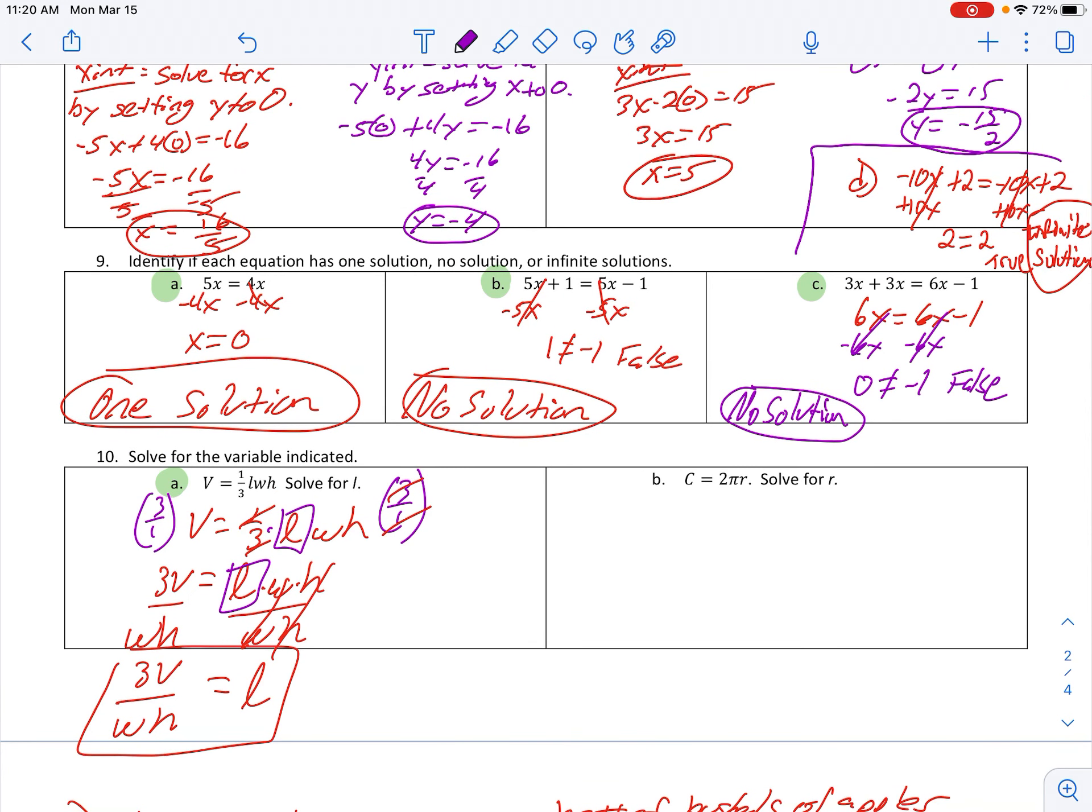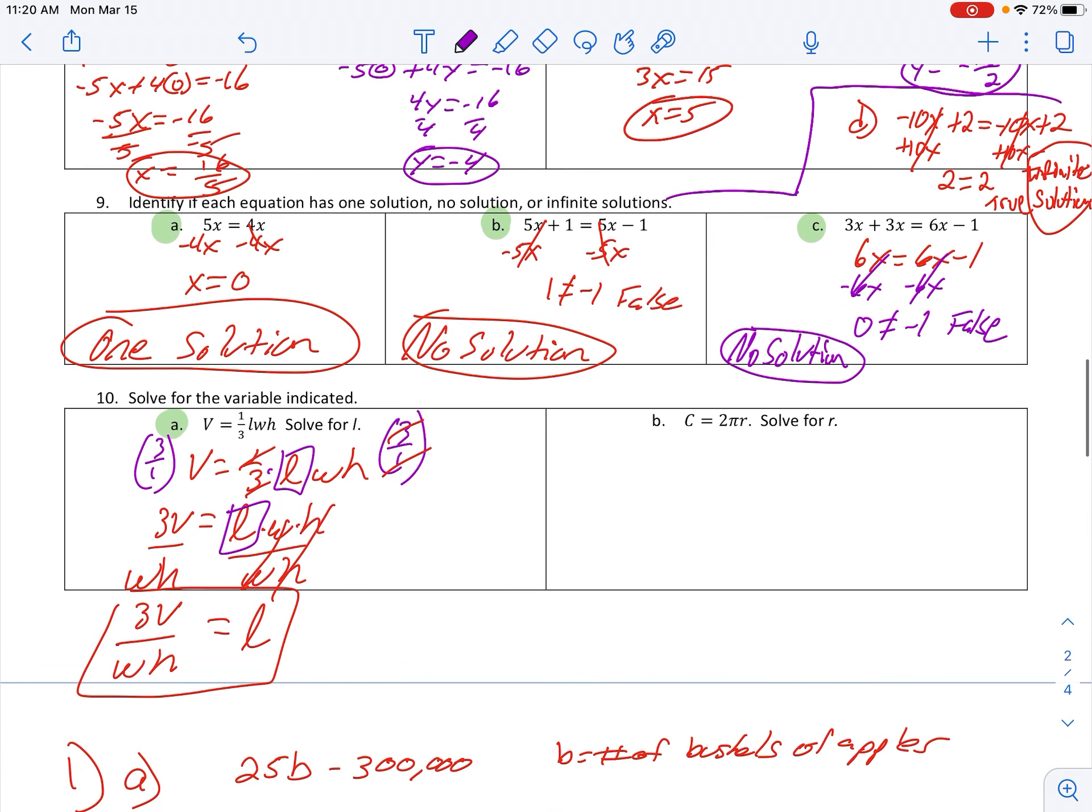All right, and then lastly, letter B, solve for R. 2 times pi times R. To get rid of multiplication, we do division. As we've been doing before, you're going to end up with something that does not look very pretty, but R is by itself, C over 2 pi.